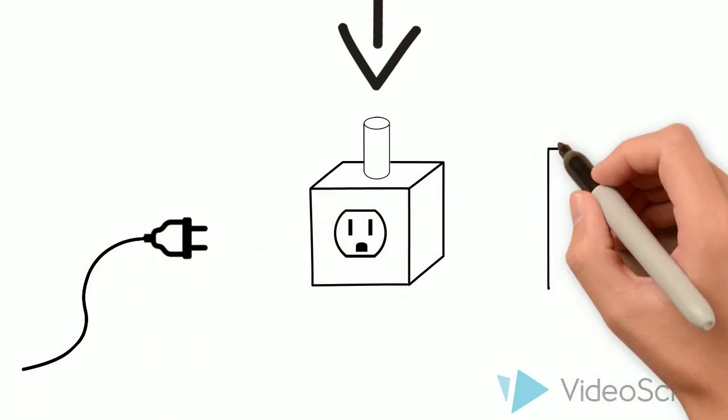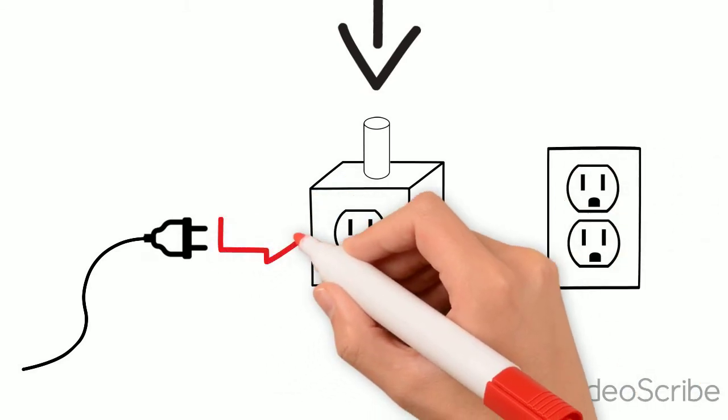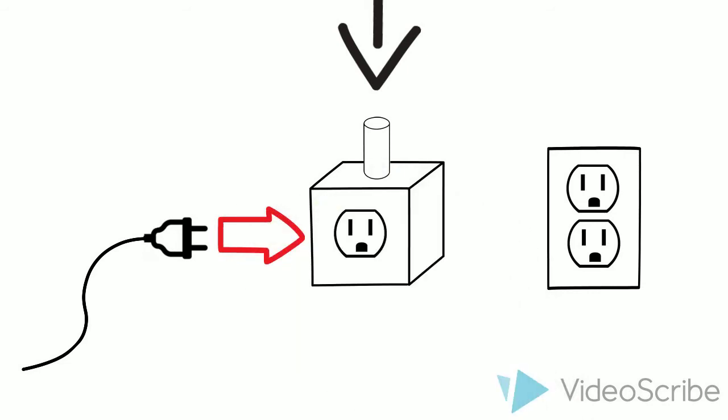At this point, we have the door's plug, the converter box, and an electric supply outlet. By inserting the plug into the converter box, and the converter box into the outlet, we complete the solution.